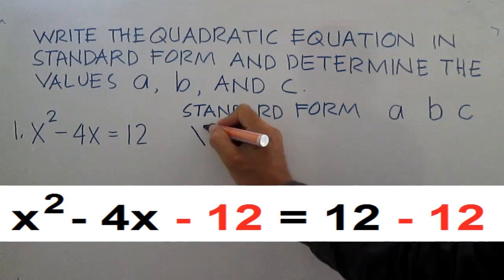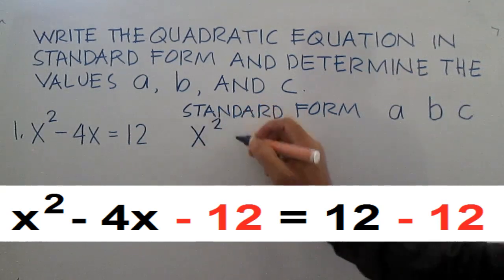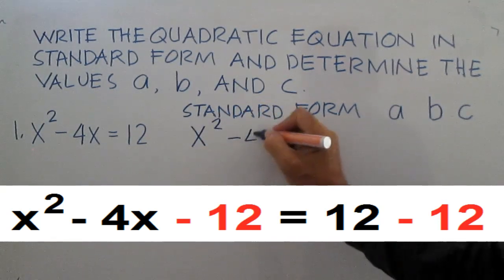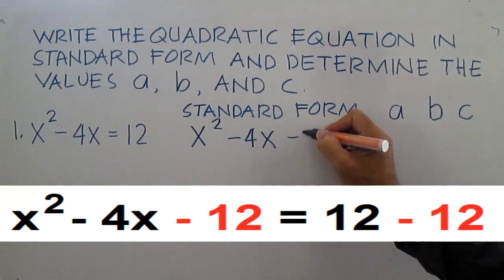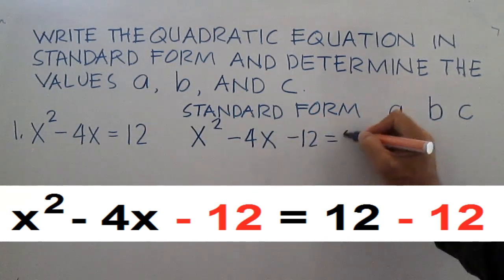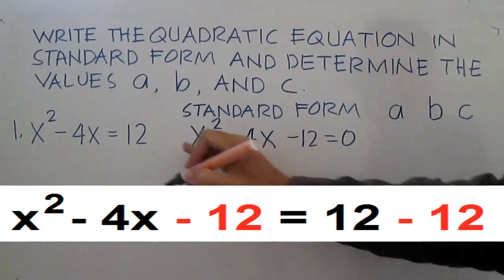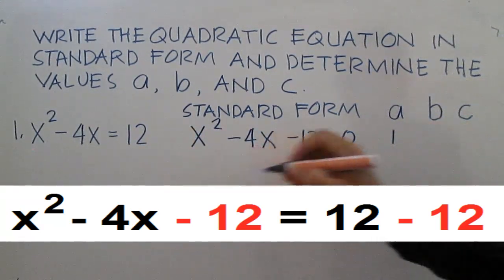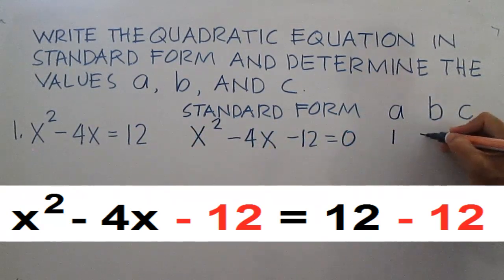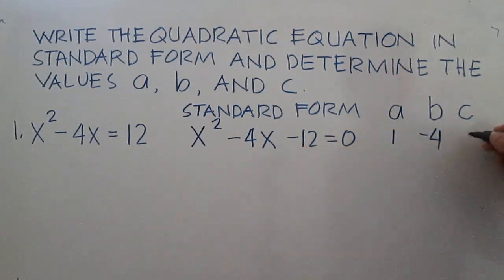The standard form is x squared minus 4x minus 12 equals 0. A here is 1, b is negative 4, and c is negative 12.